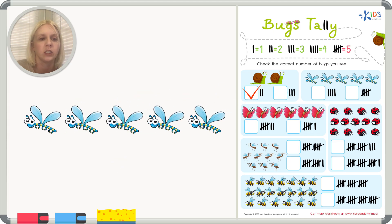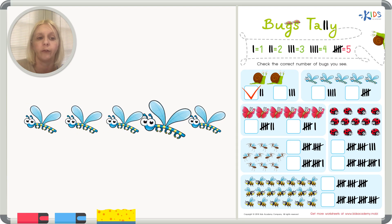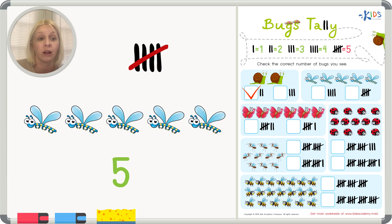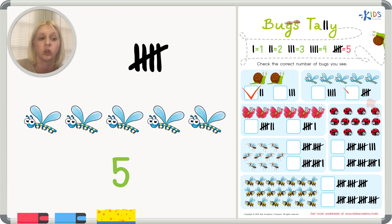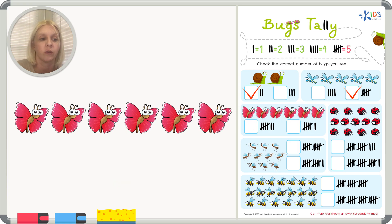The next one looks like some flies — maybe fireflies. Let's count: one, two, three, four, five. Remember how we do five? You see that line going across? That's the fifth tally. So we can already see that this is five without even counting them, because the crossed line keeps track of our fives. So I'm going to put our check right here.